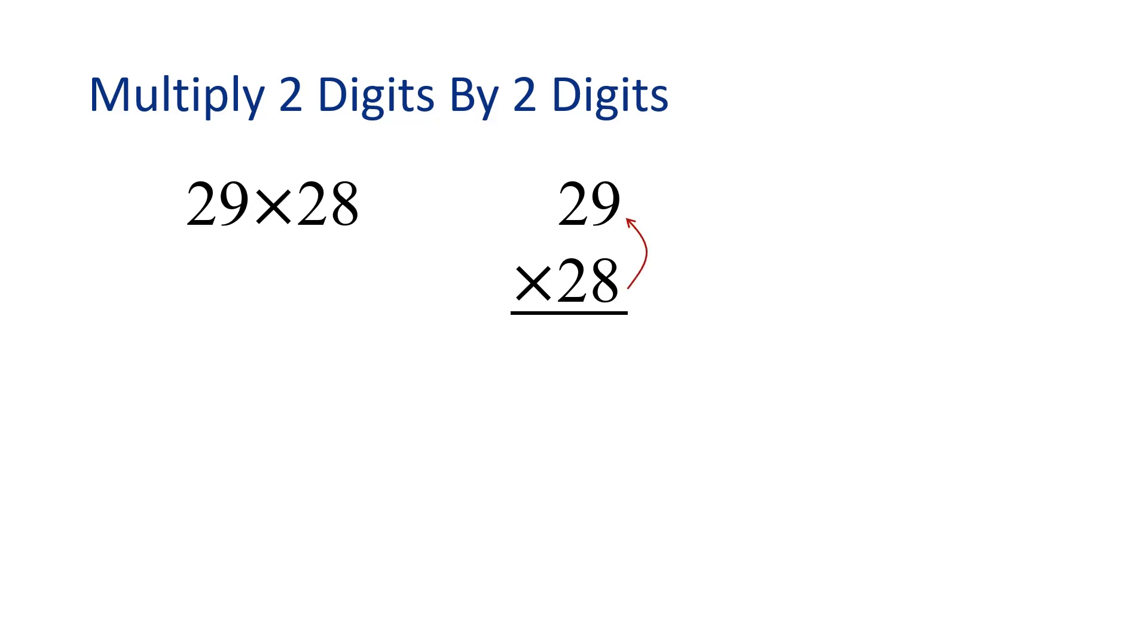8 times 9 is 72. Here, we'll carry the 7. Now multiply 8 times 2, which is 16, and then we add 7. This gives us 23.